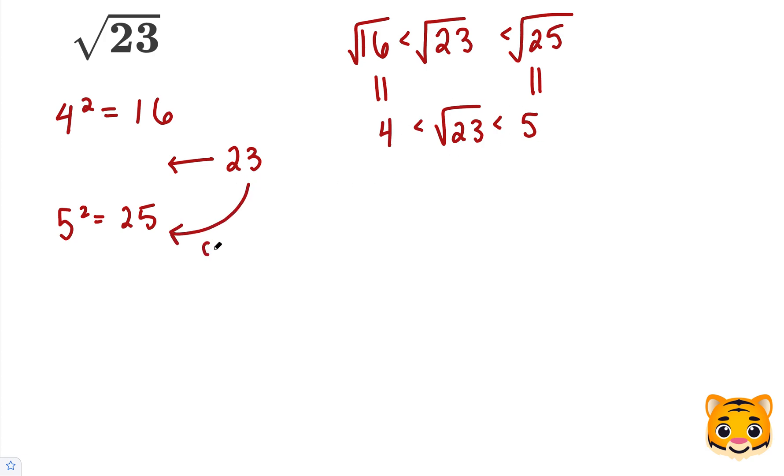However, because 23 is closer to 25 than it is to 16, our tenths place decimal approximation of the square root of 23 will be closer to 5 than it is to 4. Let's try out 4.8 squared and see how close we can get to 23.